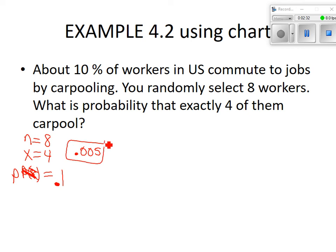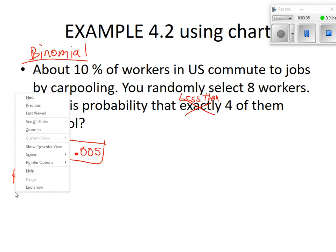So if we go out in the hallway and we stand and we pick out 8 people, the probability that exactly 4 of them are going to say that they commute to work, they carpool to work, the probability is .005. What if it said less than 4? Could we still use the chart? Yeah, we do the same thing on the chart. You go over to where, go down to where n is 8, x is 4, look over there, and we want less than 4, so we don't want 4, but we want 3, 2, 1, and 0, and we add all of them up. So just to try to refresh your memory on the binomial stuff. It's been a while.